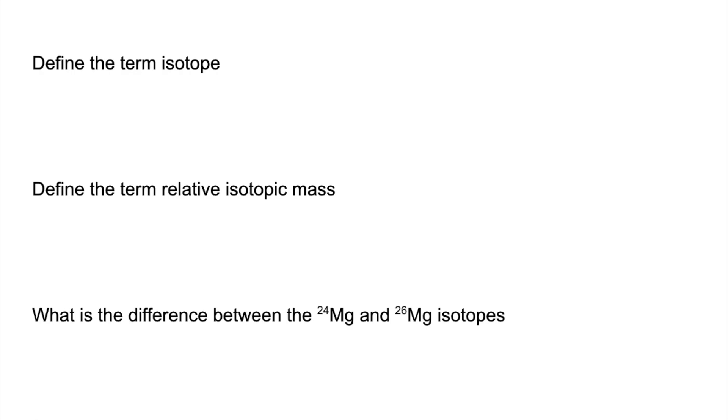So a couple of definitions to start with. Define the term isotope, so we have to say atoms of the same element with different numbers of neutrons.